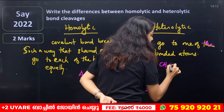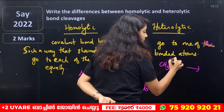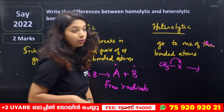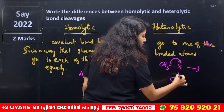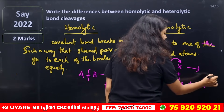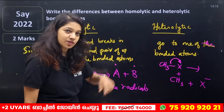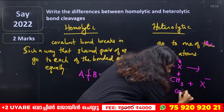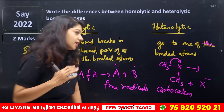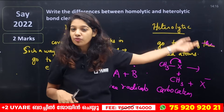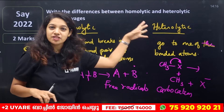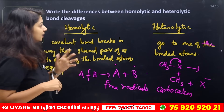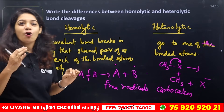Heterolytic cleavage: CH3X. This bond breaks with one electron. X is a negative element. This bond breaks and the shared electrons go to X. If you have a positive charge, CH3 is a positive charge because you have to use the electron. Plus, X is an electron — that is X⁻. We have to call it carbocation. Free radicals are formed. Highly reactive.